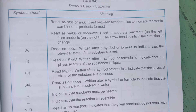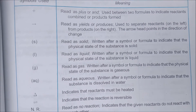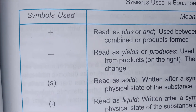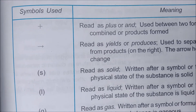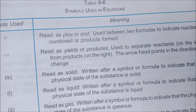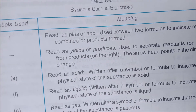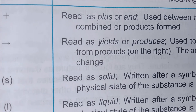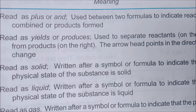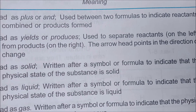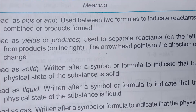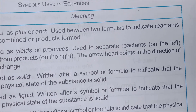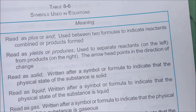We have certain symbols used in chemical equations. The plus sign is read as 'plus' or 'and,' and it is used between two formulas to indicate reactants combined or products formed. The arrow is read as 'yield' or 'produces,' and it is used to separate reactants on the left side from products on the right side. The arrowhead points in the direction of change.